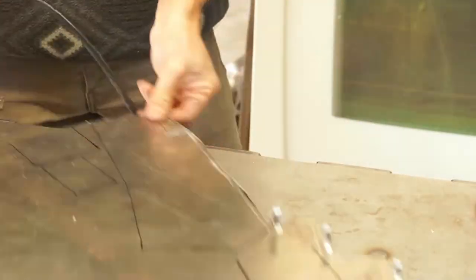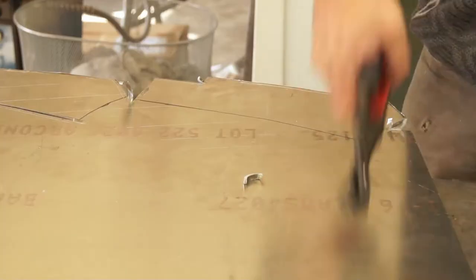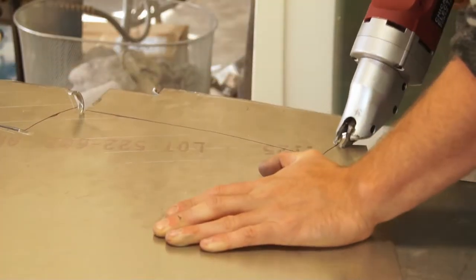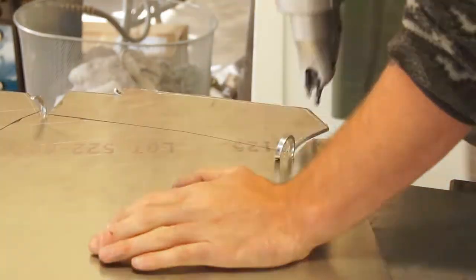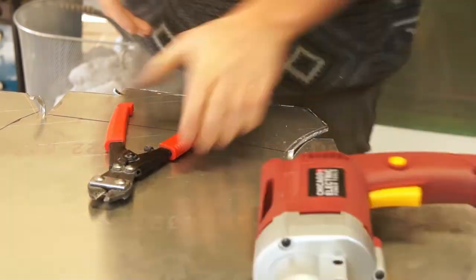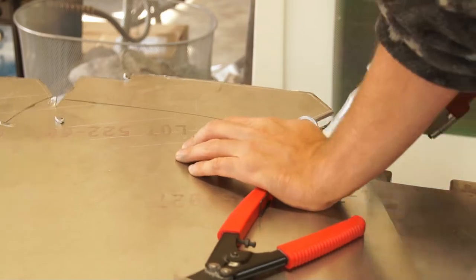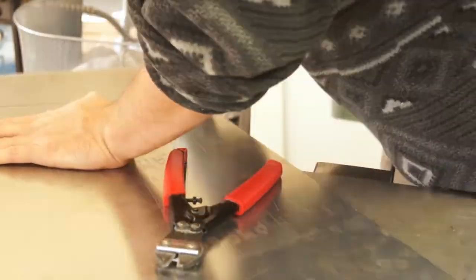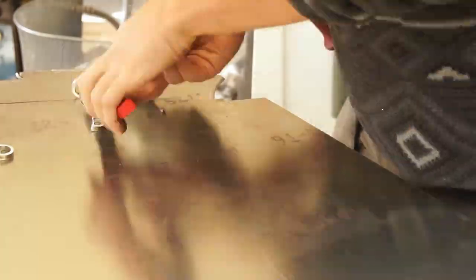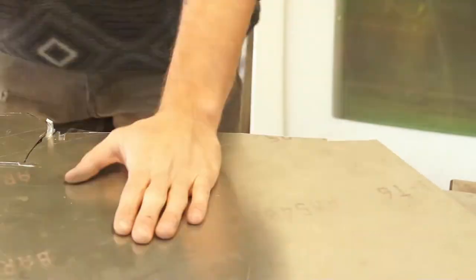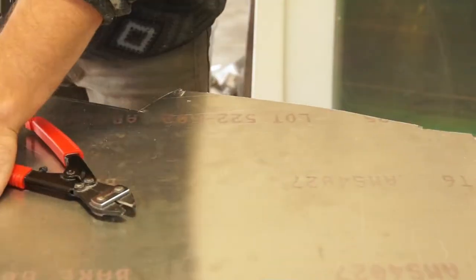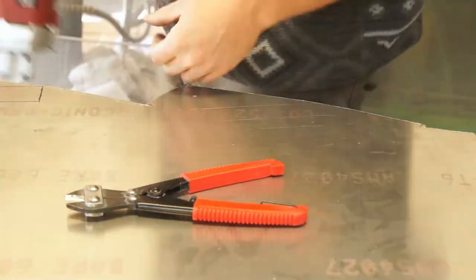These shears work pretty good on this material, but it's a little bit thick for it. So what you're seeing me do is go in there with a pair of tiny handheld bolt cutters and cut off the curls. As the curls curl back onto the shear jaws, they actually stop me from being able to push the material forward.